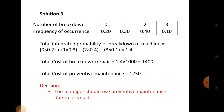The total expected number of breakdowns is 1.4. Multiplying by the breakdown cost of $1,000, the expected total breakdown cost is 1.4 × 1,000 = $1,400 per month. Since the preventive maintenance cost is $1,250 per month, preventive maintenance is the cheaper option.